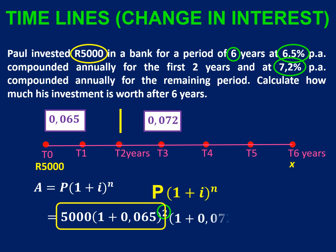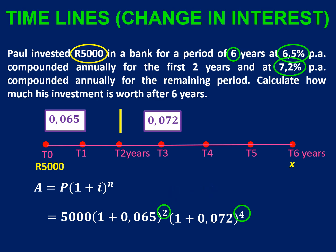The interest is now changing to 7.2%, so 0.072, and it's like that for four years. The reason we do this as one calculation is that if you push equals after the first part, you might be tempted to round off to two decimal places, but in financial maths you don't want anybody rounding your money down. So we carry on with the next bracket. You can type it in with a multiplication sign, or just go straight into the next bracket after the exponent. You should end up with R7,429.42.